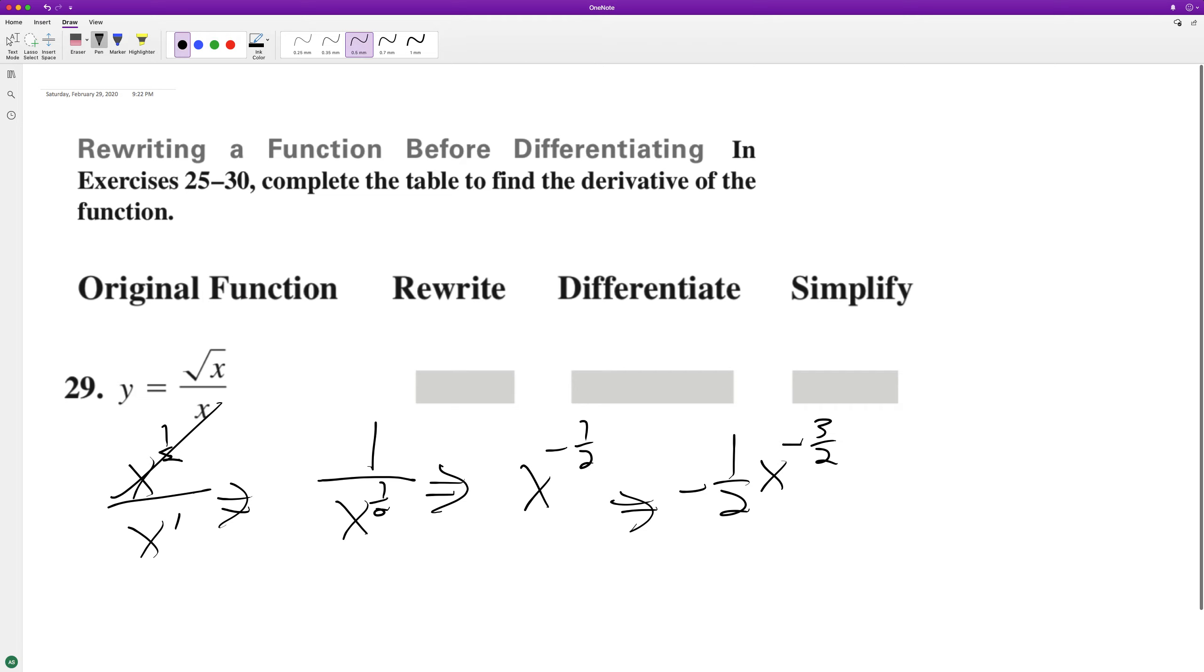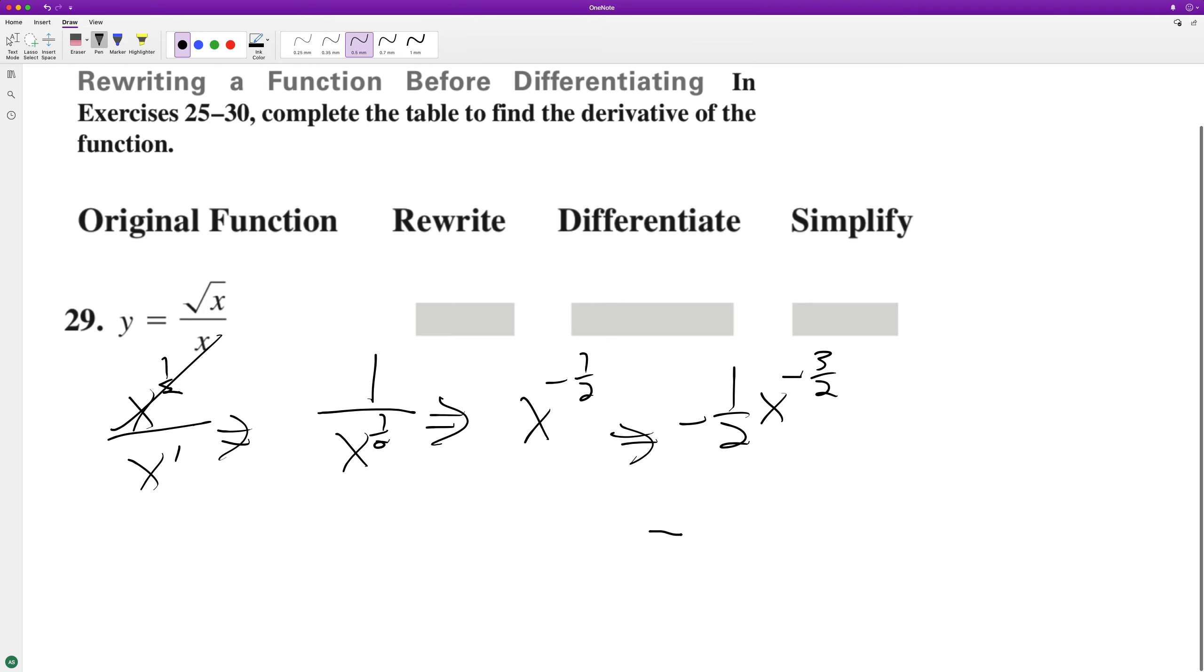And if we want to rewrite this as positive exponents, we can put this as negative 1 over 2 x raised to the 3 halves.